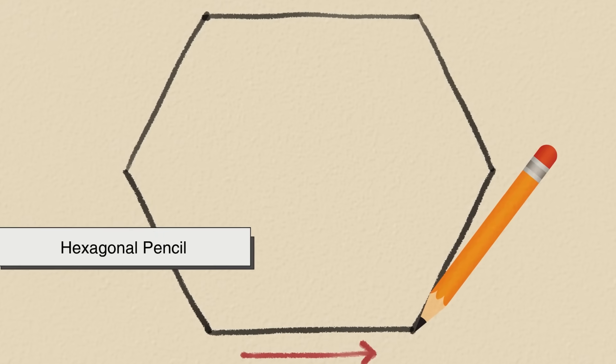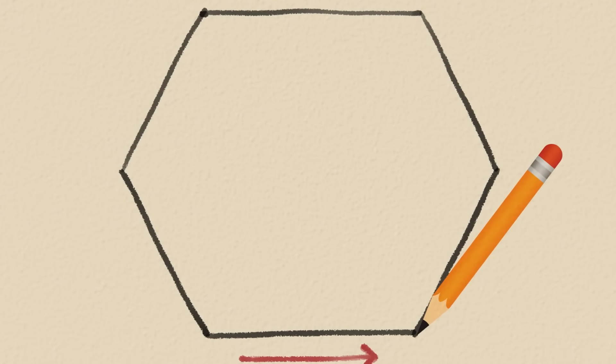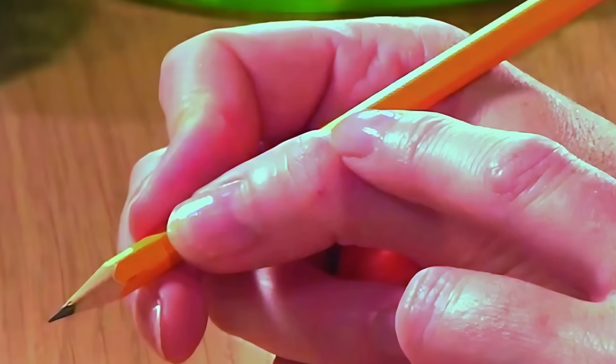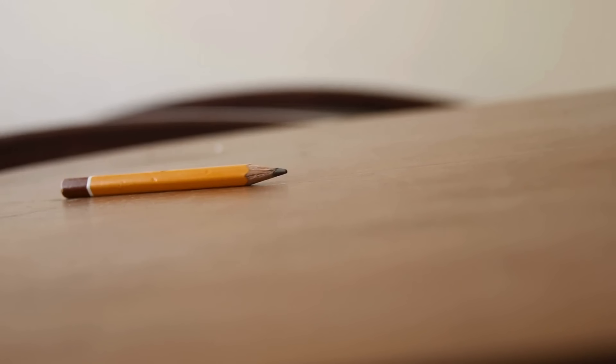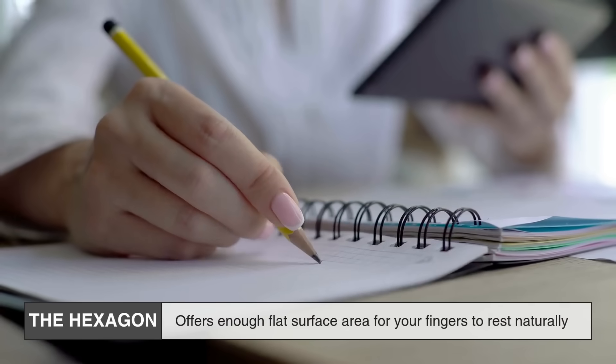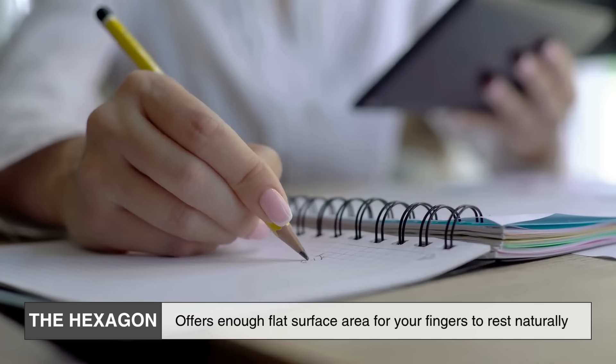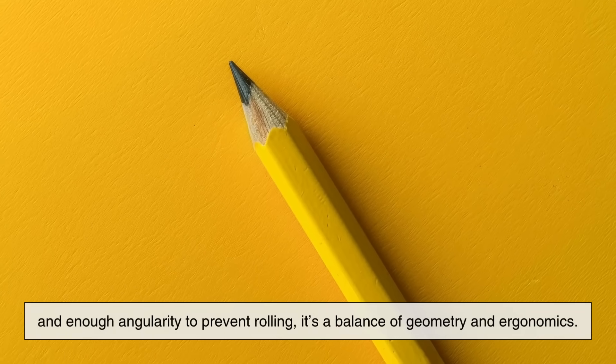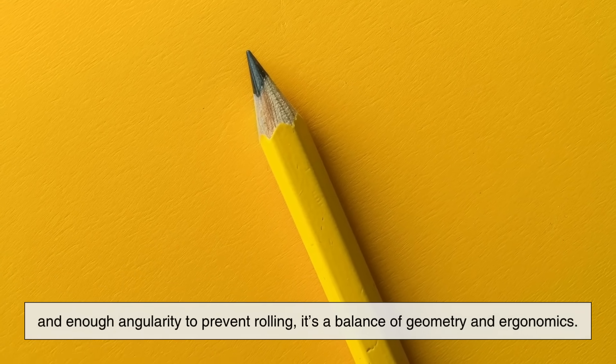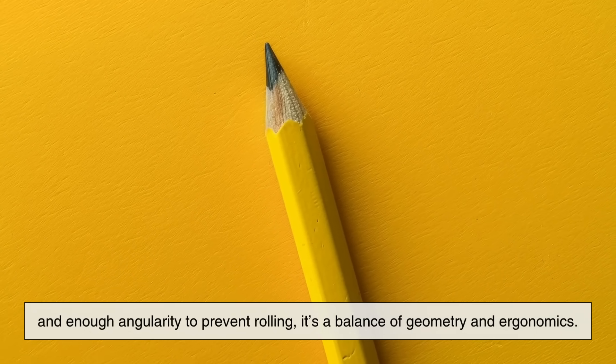Enter the hexagonal pencil. By simply shaving off six equal sides, manufacturers discovered that pencils were not only easier to grip, but also stayed in place when set down on a desk. The hexagon offers enough flat surface area for your fingers to rest naturally, and enough angularity to prevent rolling. It's a balance of geometry and ergonomics.